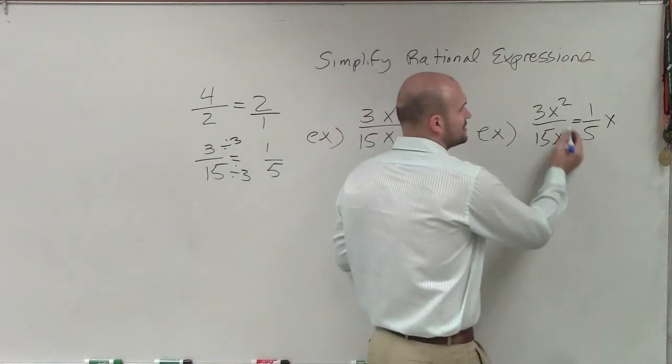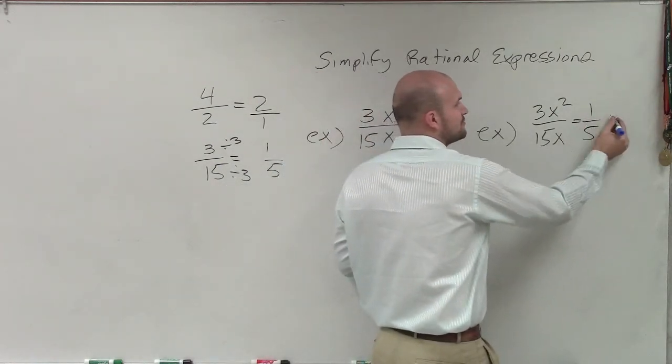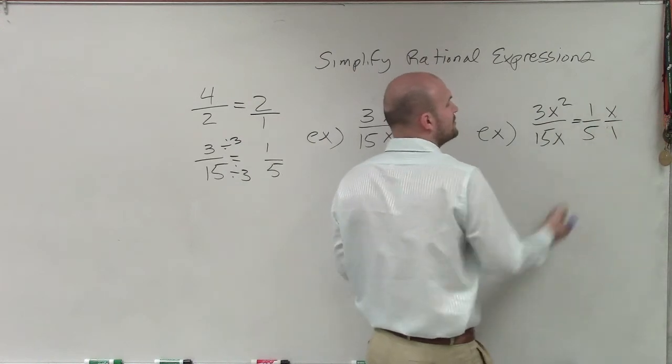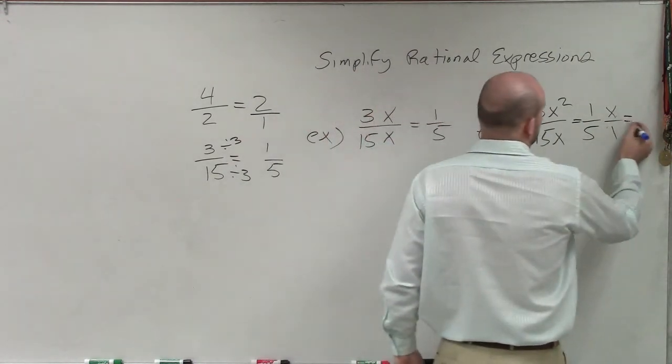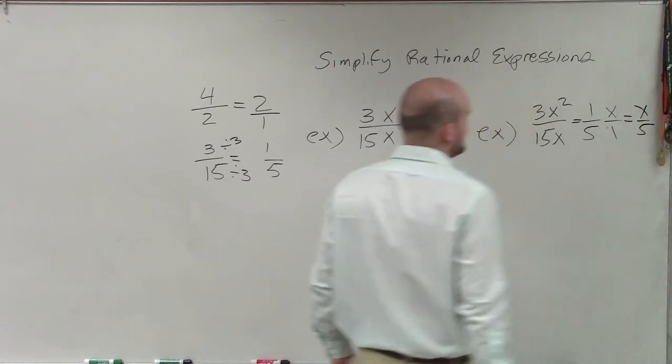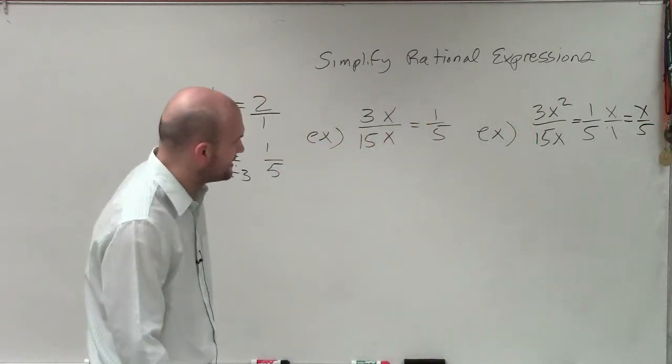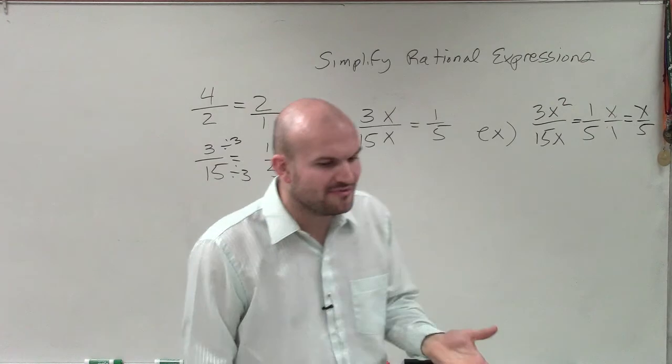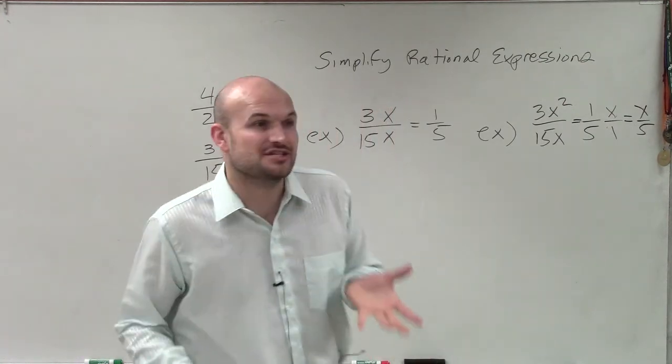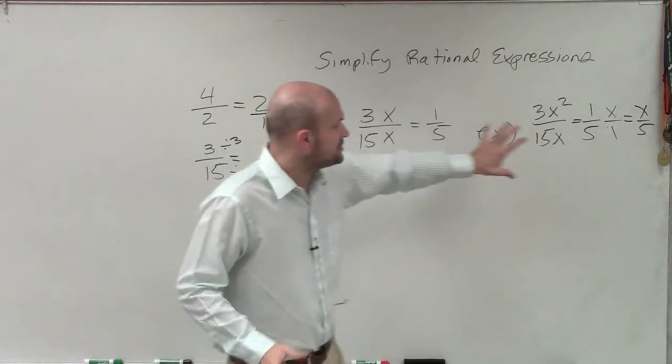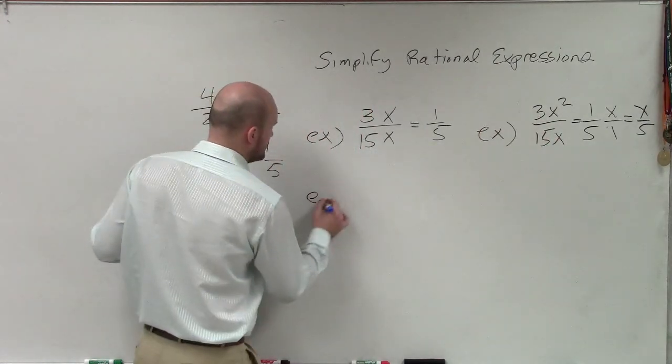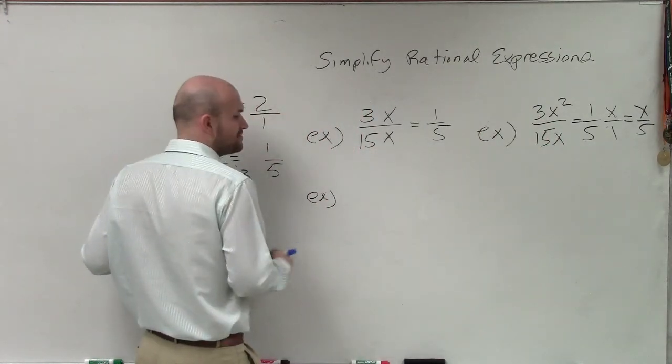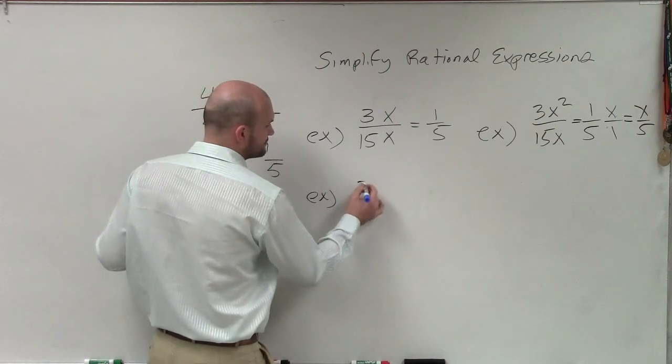So you can rewrite it as 1 fifth x. We could also make sure that the x is in the numerator, though. So it's really up top. So we could really simplify this to just x over 5 in this case would be another way to write that. Now, when simplifying rational expressions, it's not just going to be reduced to these different monomials up top.